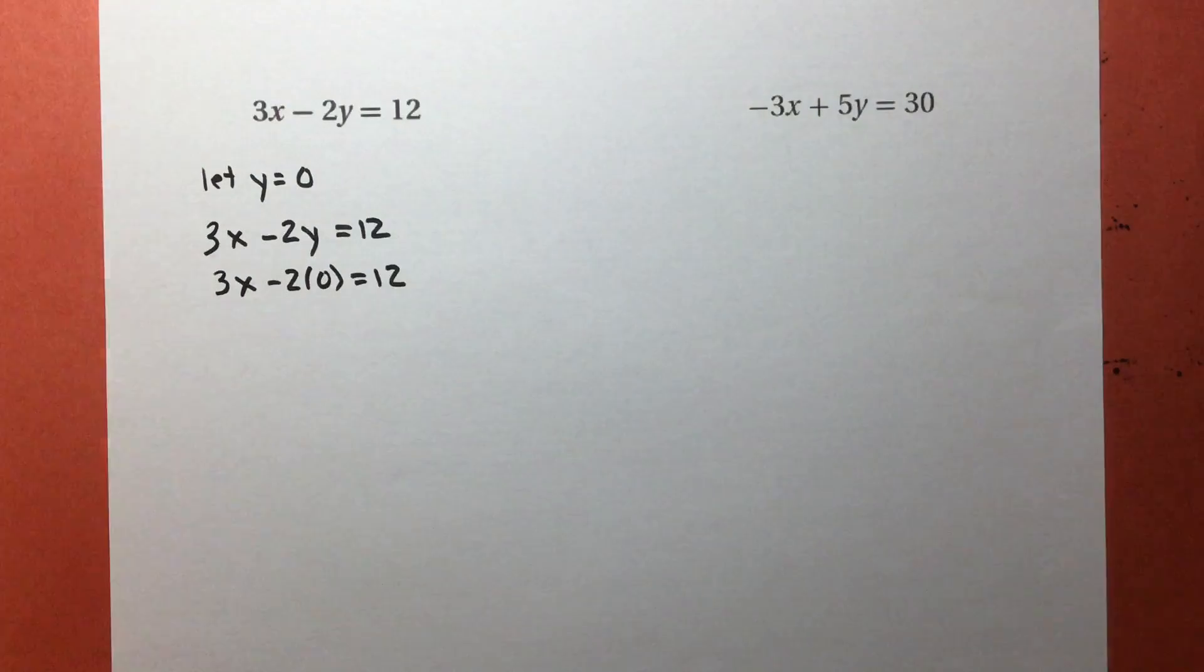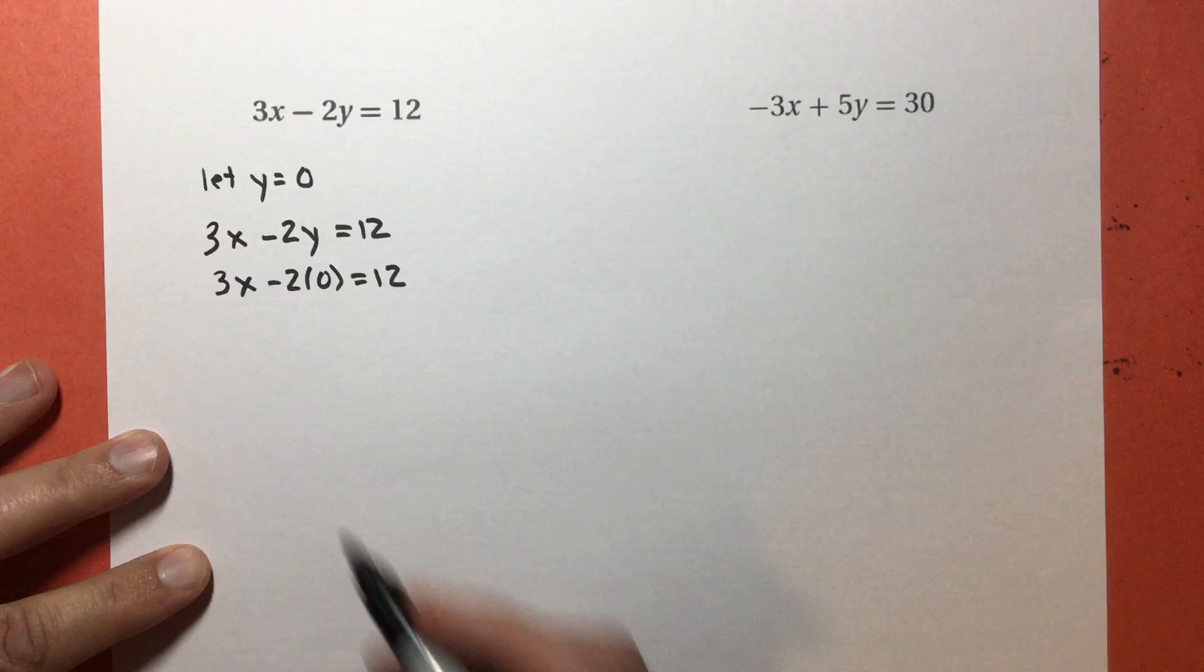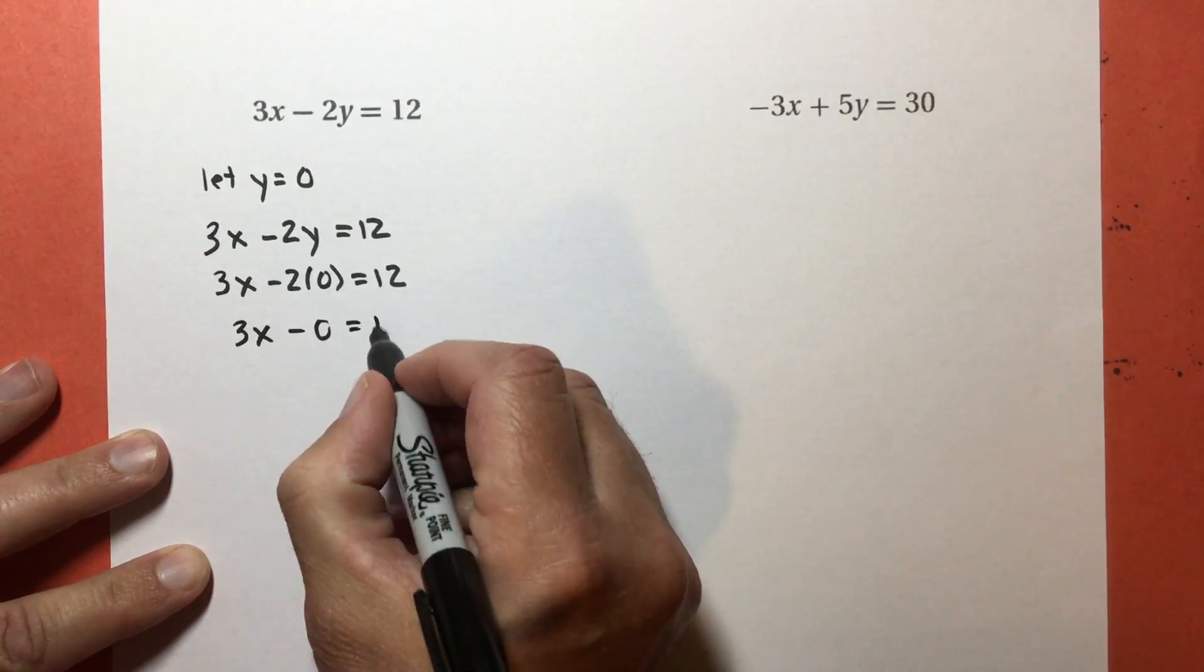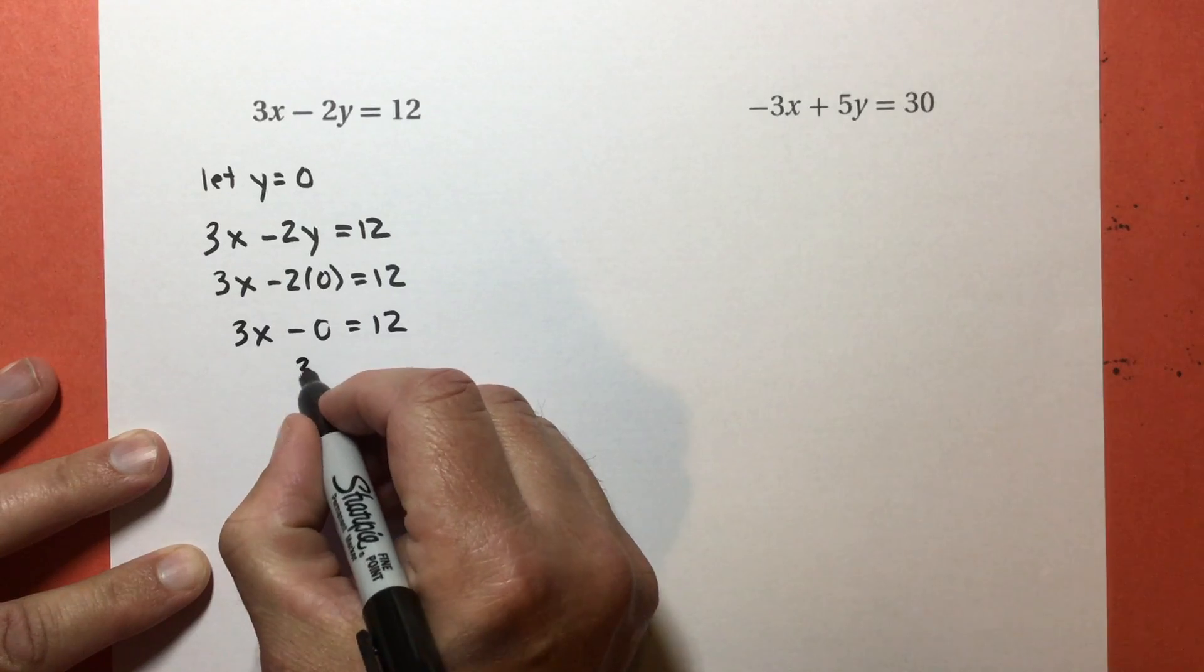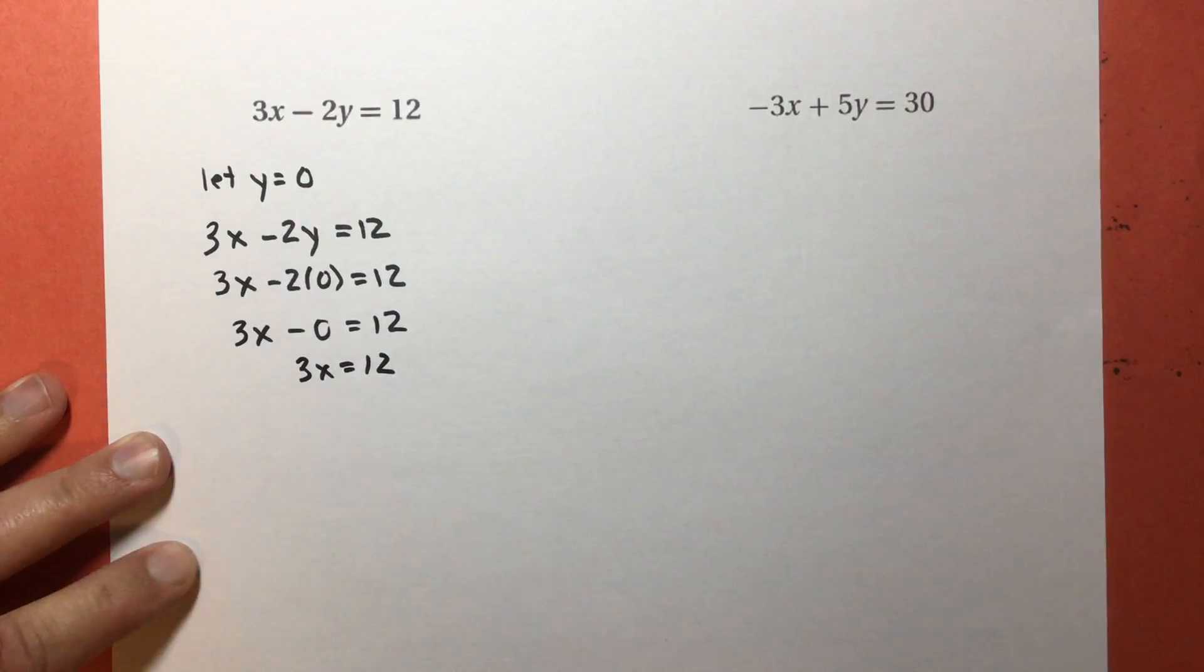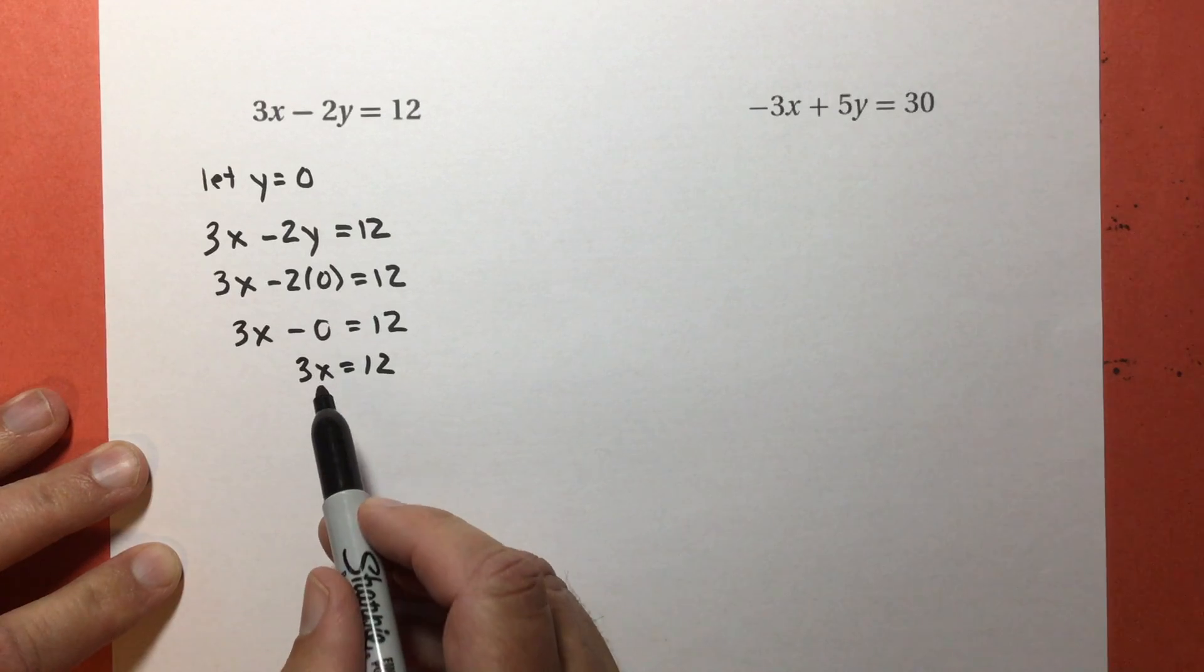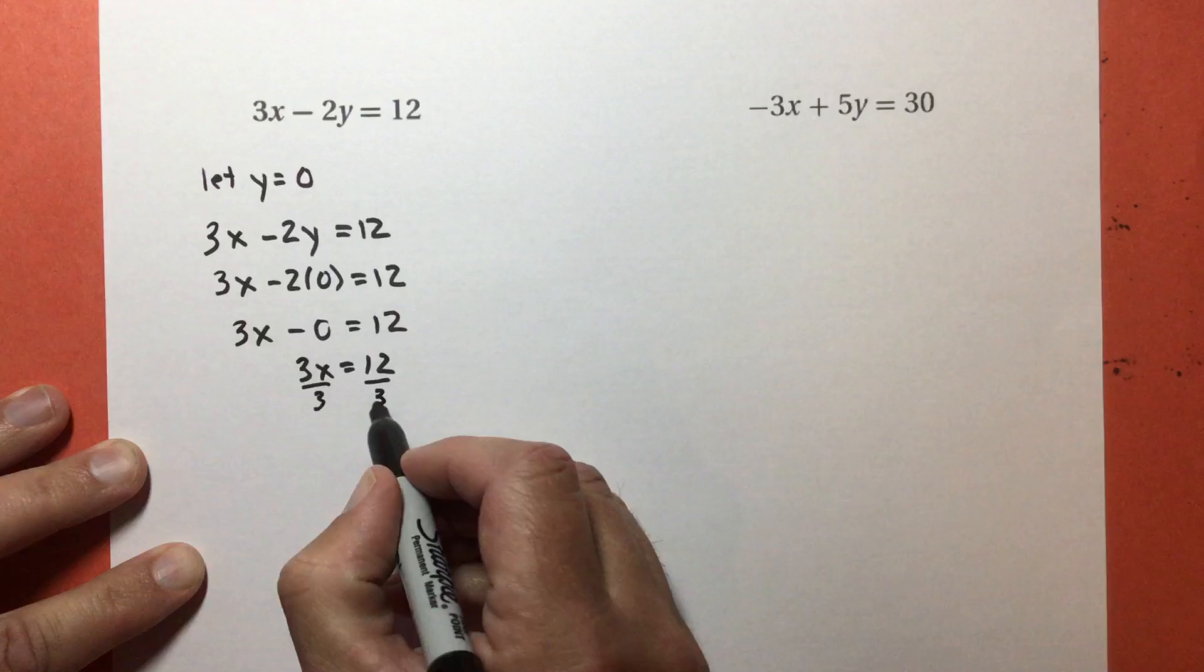So I get 3x subtract 2 times zero equals 12. What is 2 times zero? That'd be zero. I'm going to write it out. I'm actually going to write out all the steps so you can see it. So this is going to be 3x subtract zero equals 12. And subtracting zero doesn't do anything, so I just get 3x equals 12. Since I multiply x by 3, to get x alone I'm going to divide by 3.